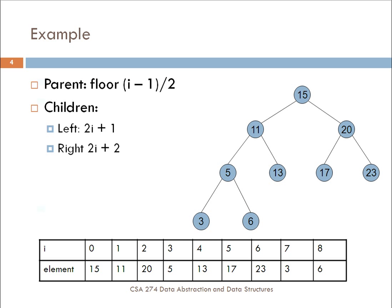You can find the parent using the floor of i minus 1 divided by 2, or finding the children by taking 2i plus 1 or 2i plus 2. For instance, if we take the node that is represented here by the 11, it's at location 1 in the array. Its parent is at i minus 1 over 2, so 1 minus 1 divided by 2 is 0, so that's where the parent is.